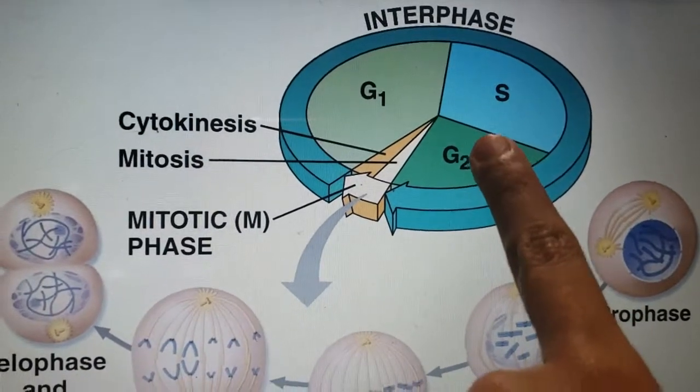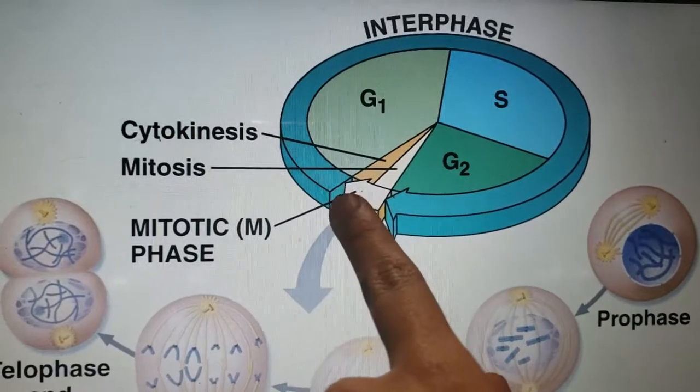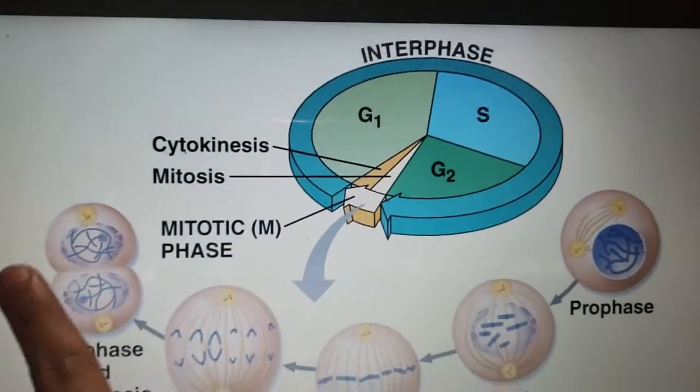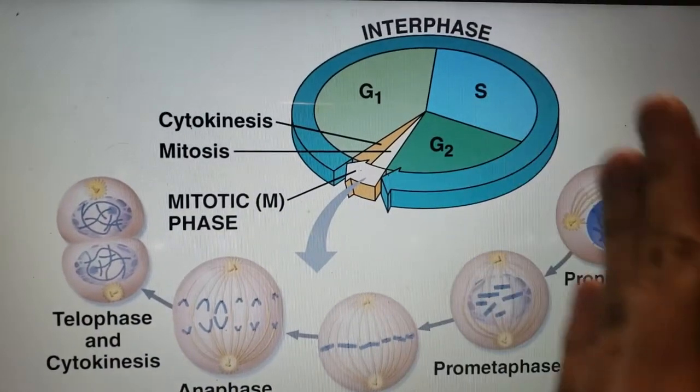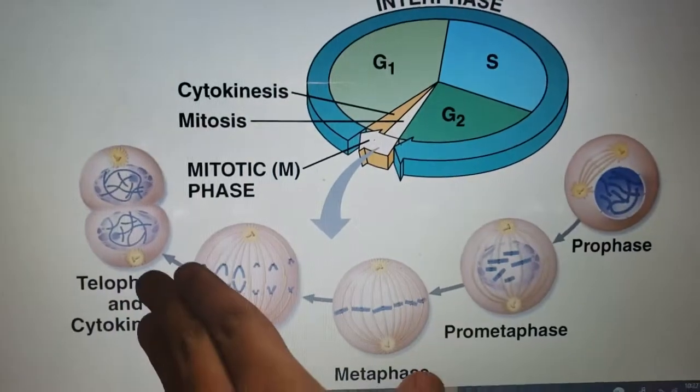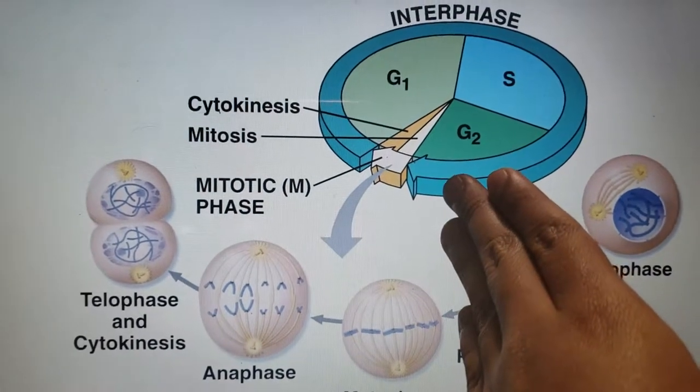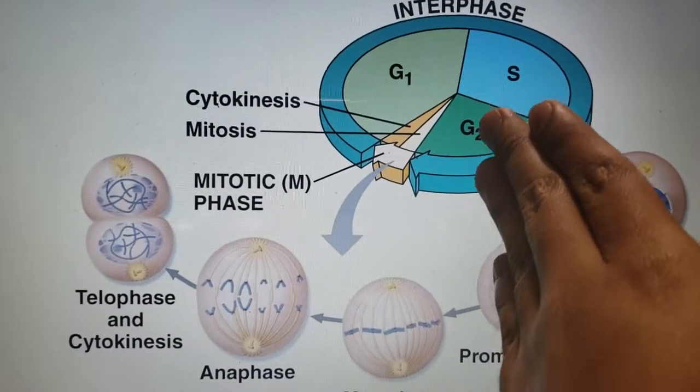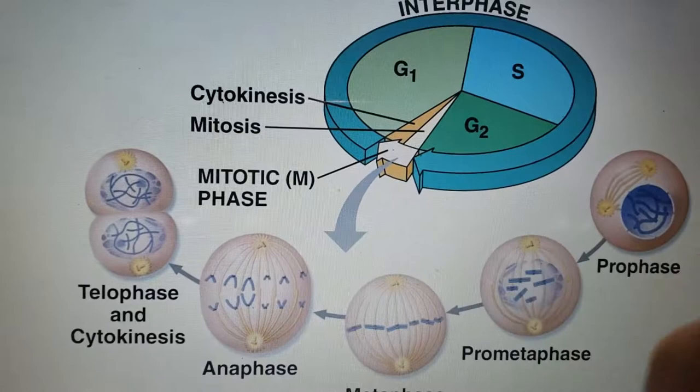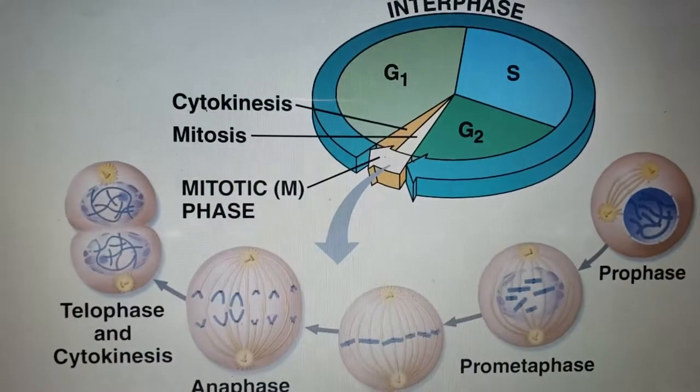In G2, the cell is preparing for mitosis, which includes prophase, prometaphase, metaphase, telophase, and cytokinesis. In G2, there is replication of organelles like chloroplasts, mitochondria, and also the endomembrane system.